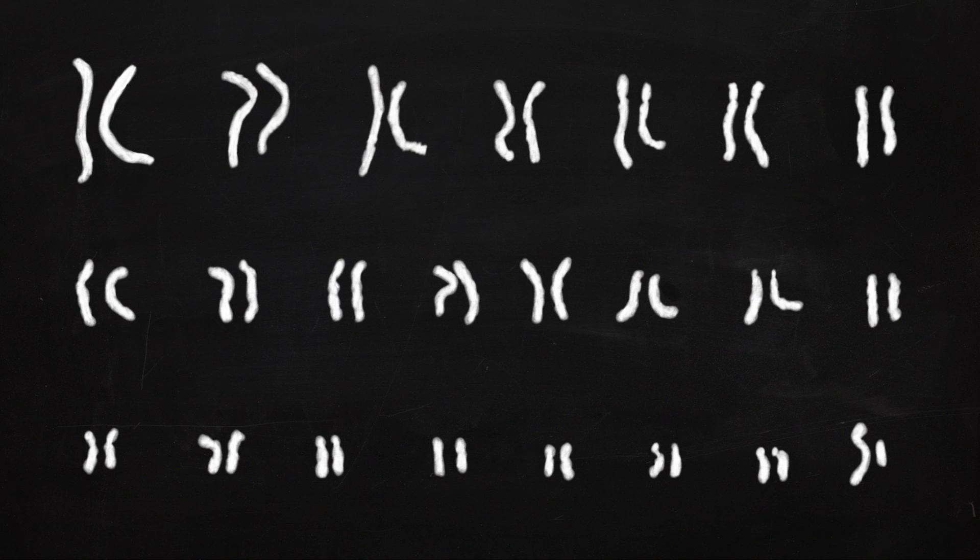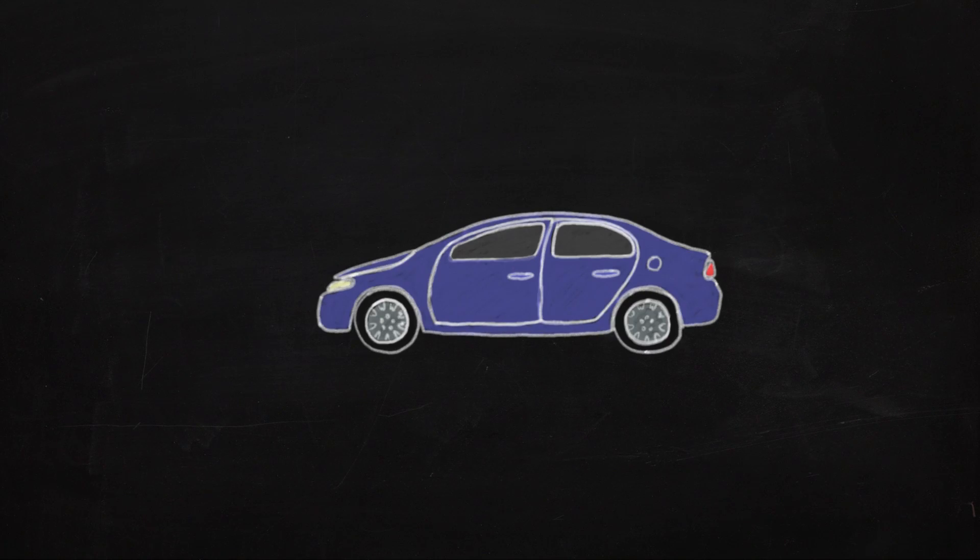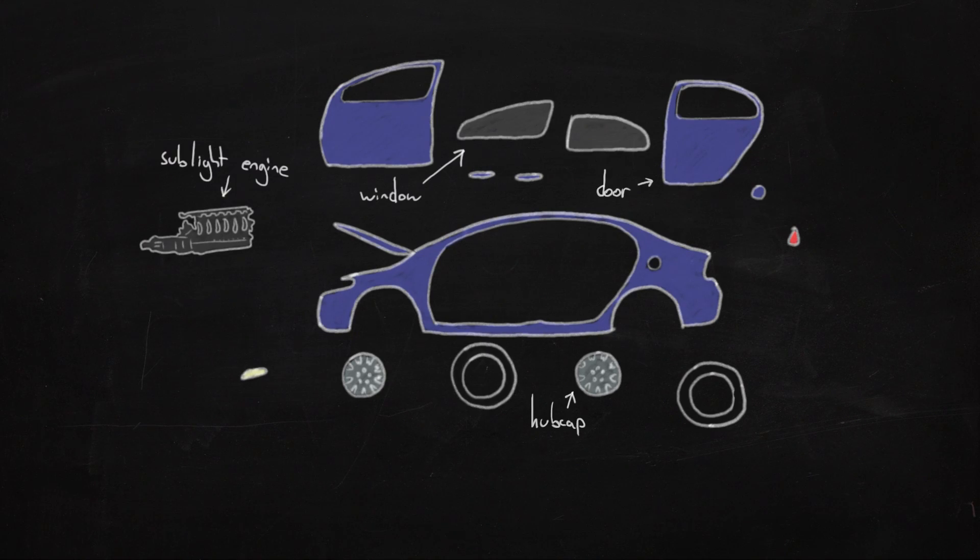A metaphor can help explain. Let's say your genome, all your DNA, is a car. A car is made up of all these different parts. These parts are your genes. A gene is just a section of DNA, like a car part is a section of a car.